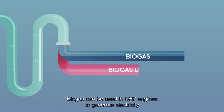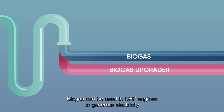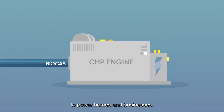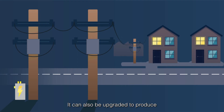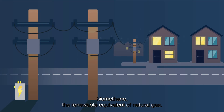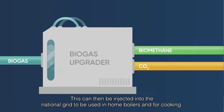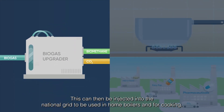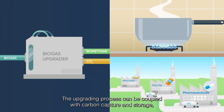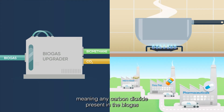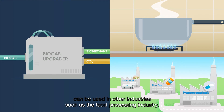Biogas can be used in a CHP engine to generate electricity to power homes and businesses. It can also be upgraded to produce biomethane, the renewable equivalent of natural gas, which can then be injected into the national grid to be used in home boilers and for cooking. The upgrading process can be coupled with carbon capture and storage, meaning any carbon dioxide present in the biogas can be used in other industries such as the food processing industry.